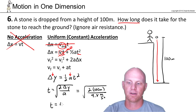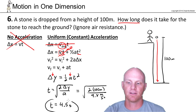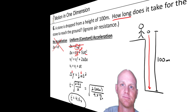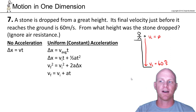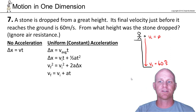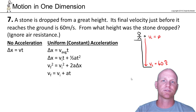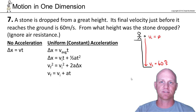If you actually work out the math, this comes out to right around 4.5 seconds — there's your answer. Question number seven: a stone is dropped from a great height, and its final velocity just before it reaches the ground is 60 meters per second. From what height was the stone dropped? Ignore air resistance.